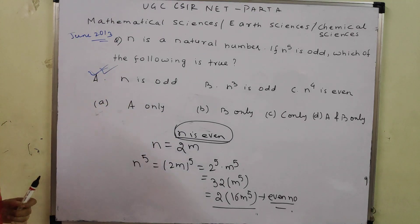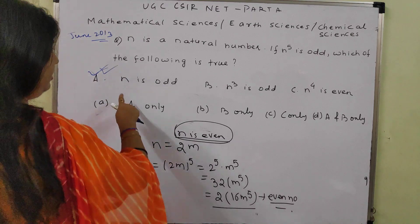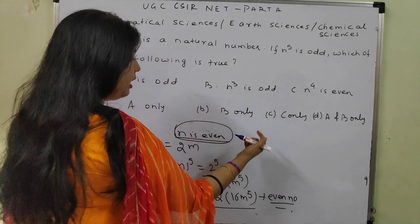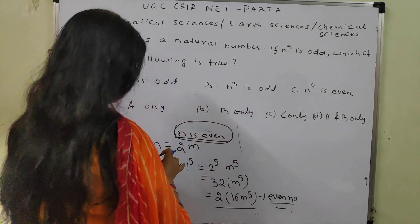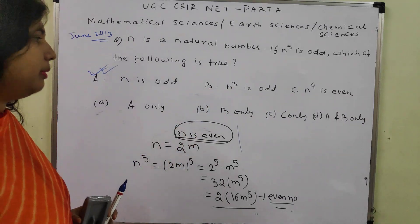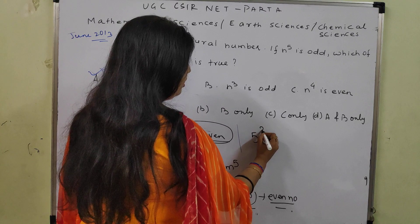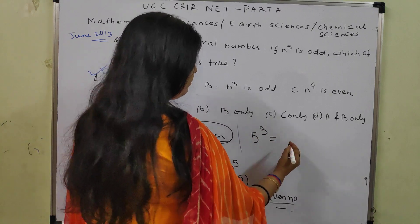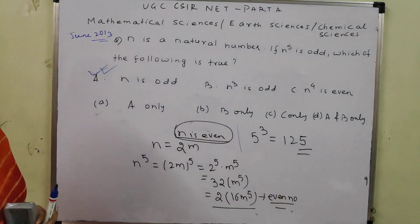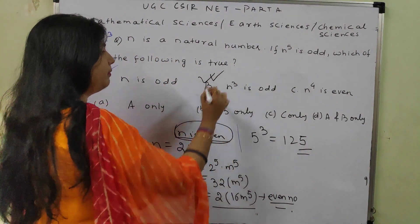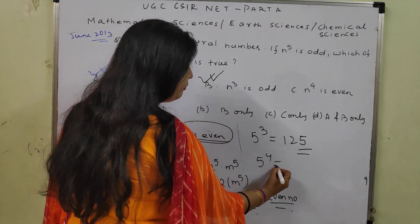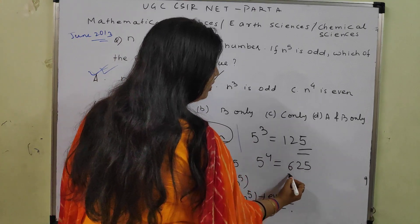Now if N is already odd, what happens with N^3? Take any odd number — for example 5^3 = 125, which is again odd. So option B is also correct. What about N^4? For an odd N, say 5^4 = 625, which is also odd — but option C states something that cannot be even, so option C is wrong.